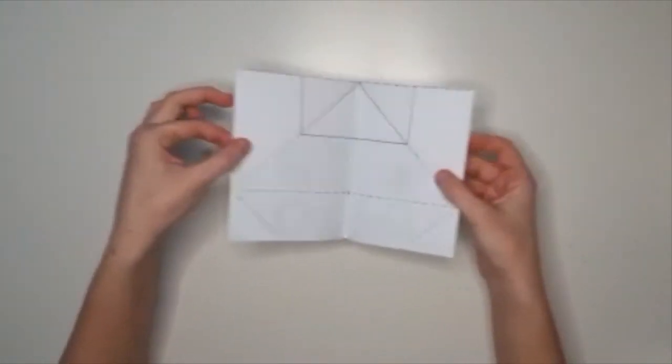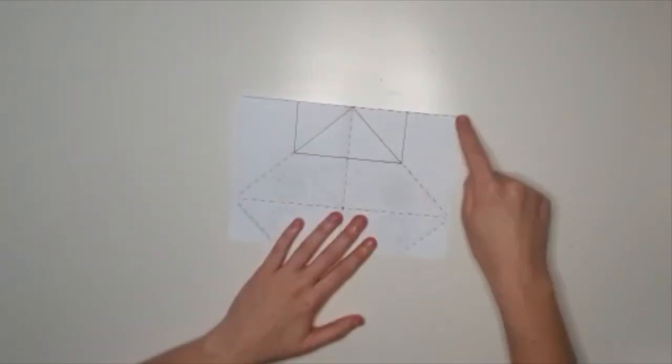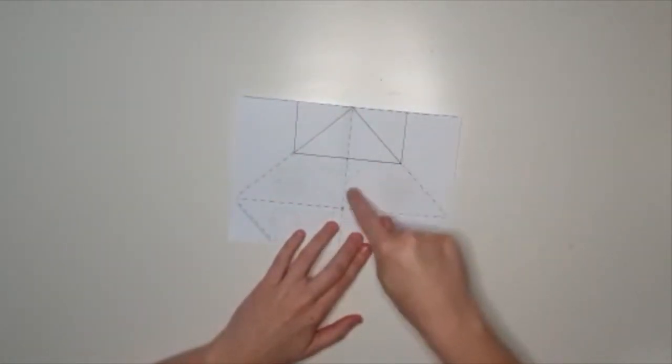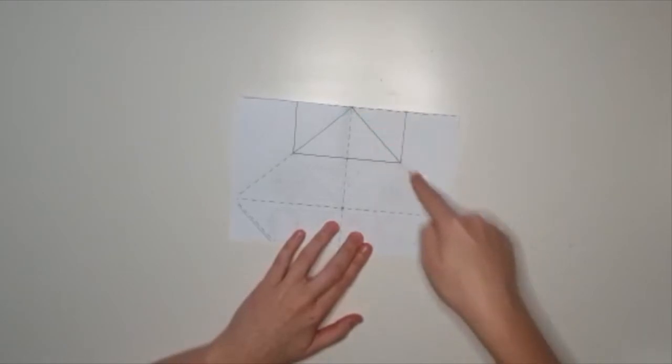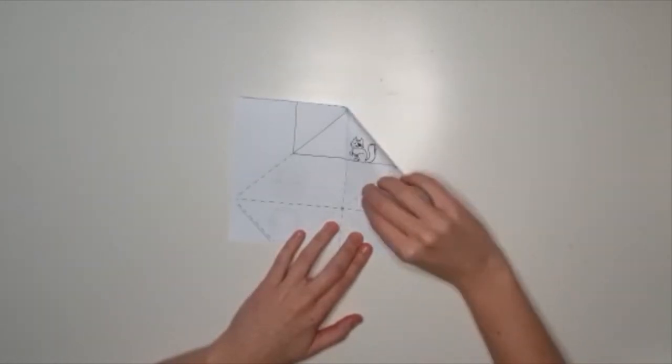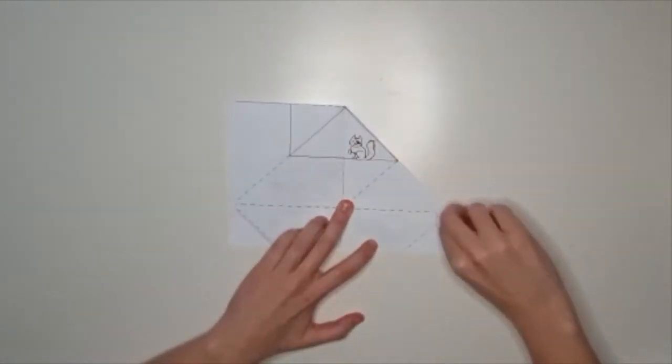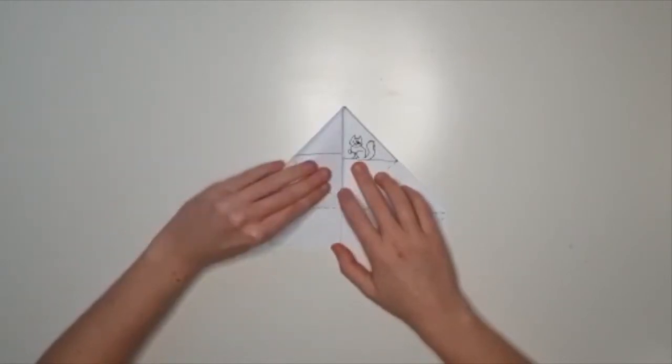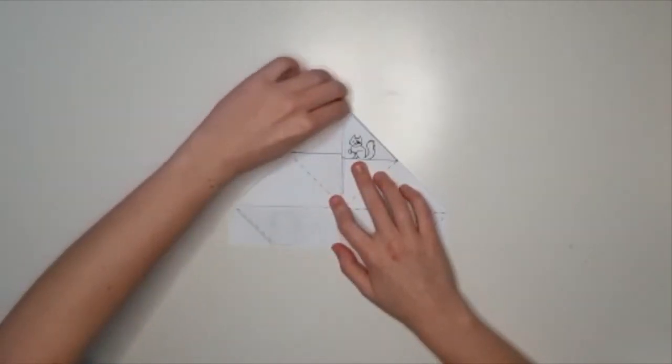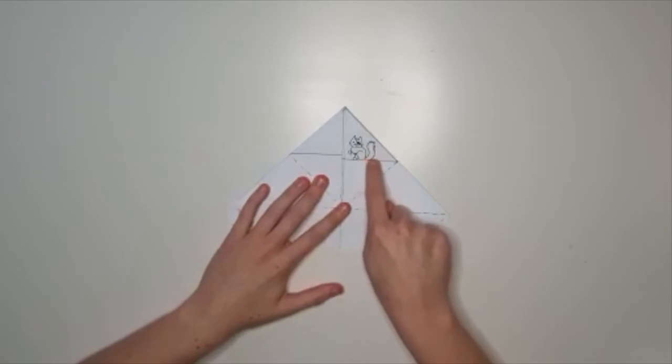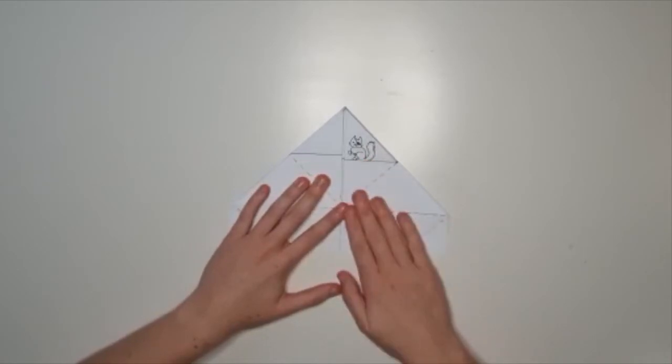Open the piece of paper up like a book and place it down flat. Now, bring these corners into the middle, across this line. You'll know that it's right because the cat will be facing towards you, on this side of the paper.